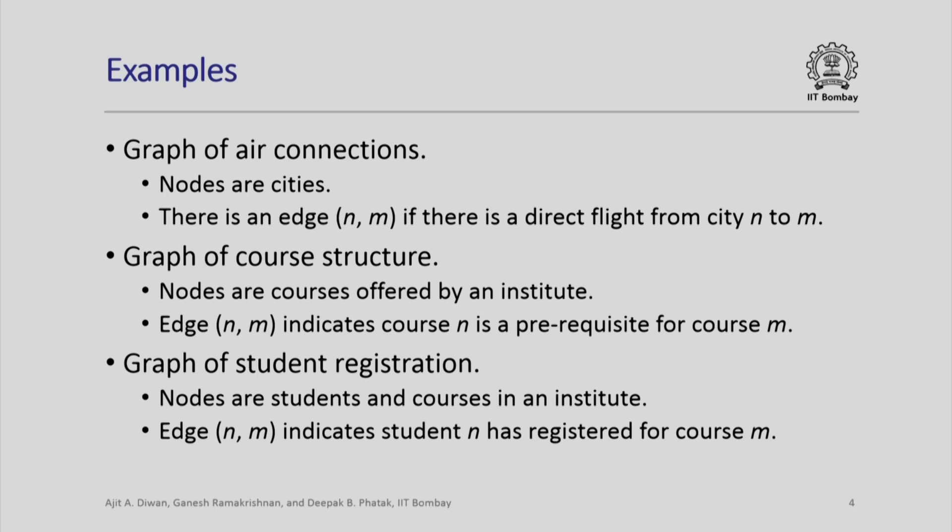You can do course m only after completing course n, and this relation between courses is indicated by the set of edges in the graph. Similarly, for a graph of student registration, nodes can be of two types — students as well as courses — and an edge (n, m) indicates that student n has registered for course m. So registration data in an institute can also be represented as a graph where the nodes are students as well as courses.